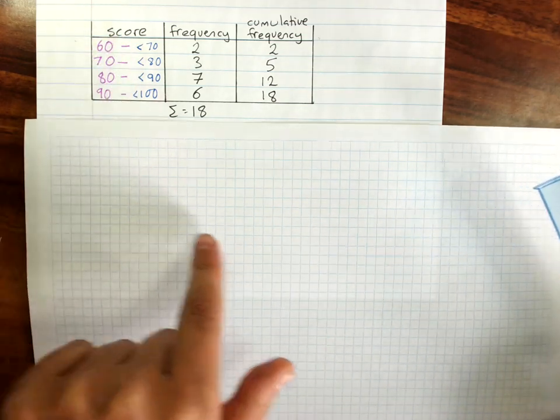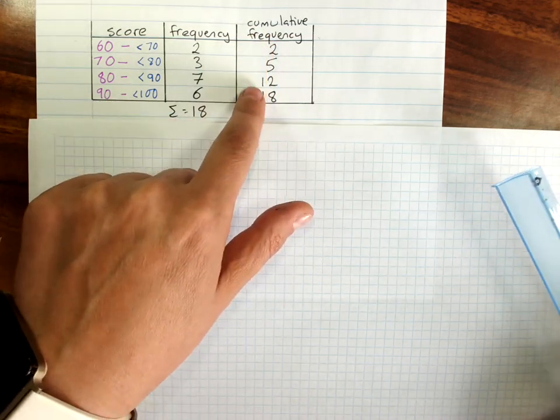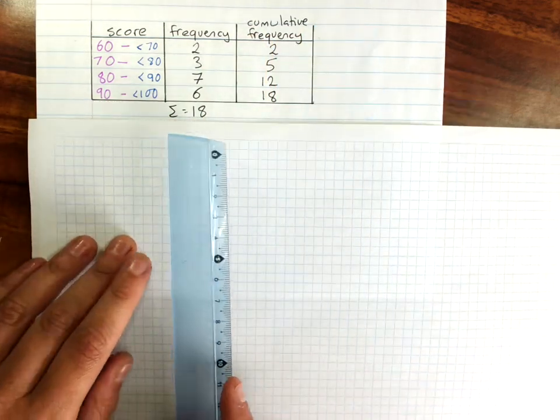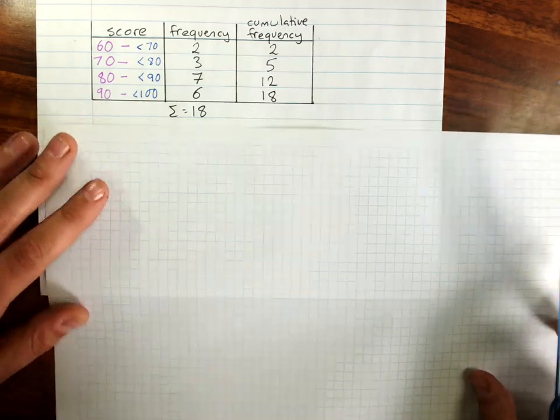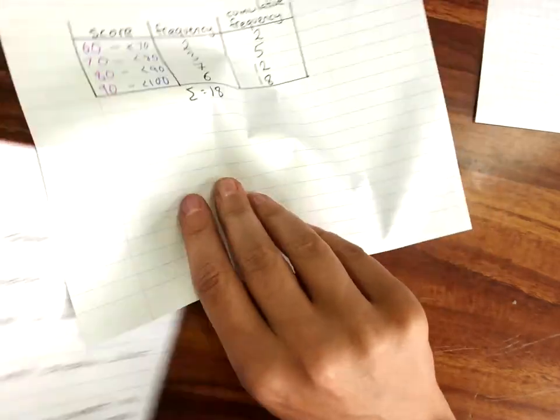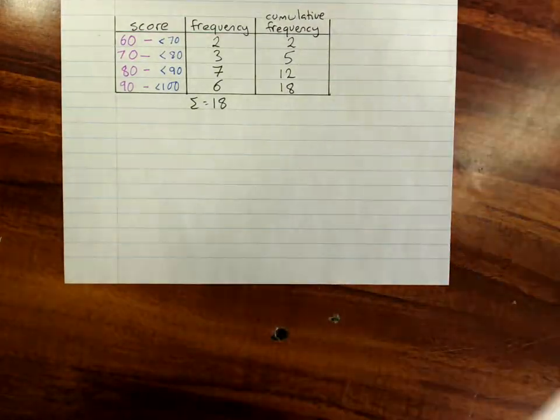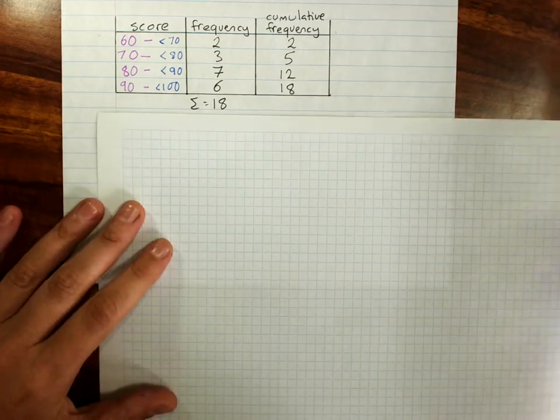So along the bottom is going to go the scores. And up the y-axis will be the cumulative frequency. So my y-axis needs to go up to 18. So I'll use 9 centimeters. I'm just trying to fit everything on one little screen here and have you still be able to read it.